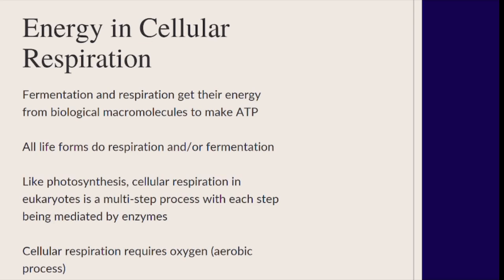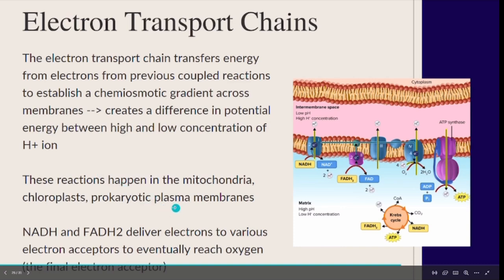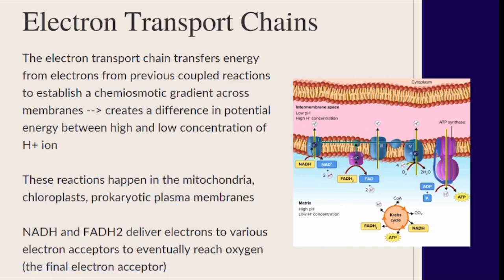Topic 3.6 is cellular respiration. Fermentation and respiration get their energy from food broken down into biological macromolecules to make ATP. All life forms either respire or do fermentation. Like photosynthesis, respiration happens in many steps, each controlled by enzymes, and respiration is an aerobic process requiring oxygen. The electron transport chain transfers energy from electrons via coupled reactions to create a gradient across membranes, and these reactions happen in the mitochondria, chloroplasts, and in prokaryotes at the plasma membrane.